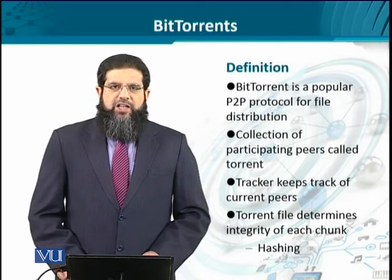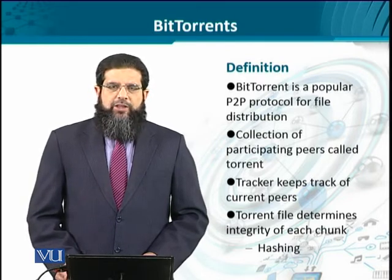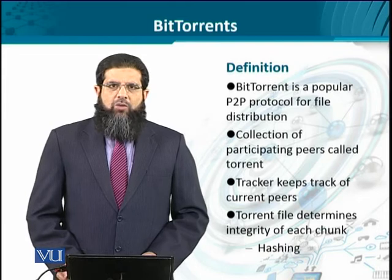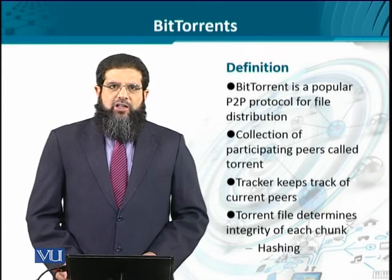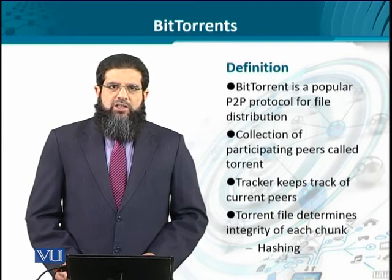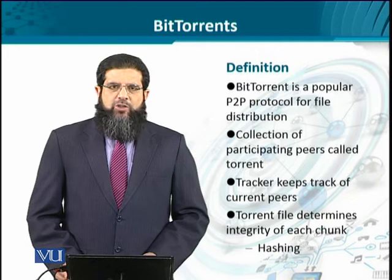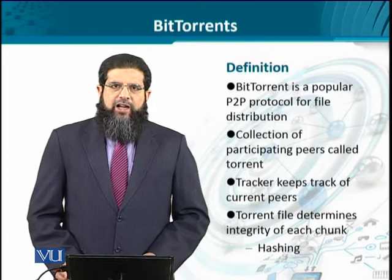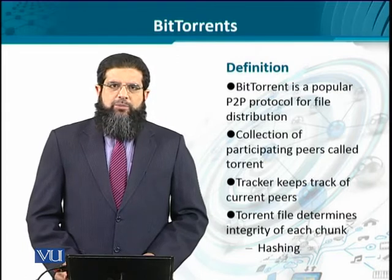There is a centralized file called the torrent file, which comes with a .torrent extension. It is mainly used for bookkeeping of all the hash functions. The torrent file keeps track of the hash functions associated with each chunk. When peers download or upload chunks, a cross-validation or verification mechanism is required to confirm that all the chunks have been downloaded and are part of the same source file.